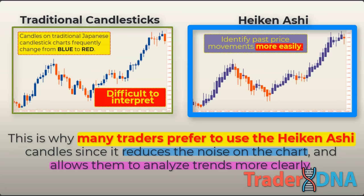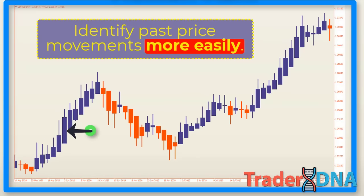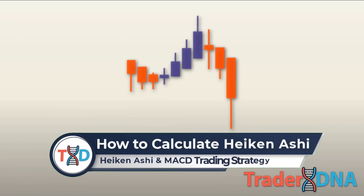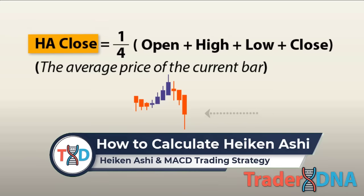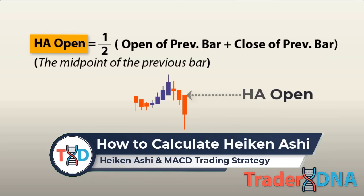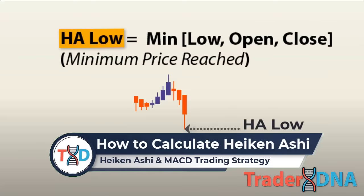What makes Heiken Ashi different is how the price is displayed in terms of the open and the close. Each Heiken Ashi candlestick starts from the middle of the candlestick before it, not from the level where the previous candlestick closed. The calculation is: Heiken Ashi close equals the average of open, high, low, and close. Heiken Ashi open equals the midpoint of the previous Heiken Ashi bar. Heiken Ashi high equals the highest of high, Heiken Ashi close, or Heiken Ashi open. Heiken Ashi low equals the lowest of low, Heiken Ashi close, or Heiken Ashi open.